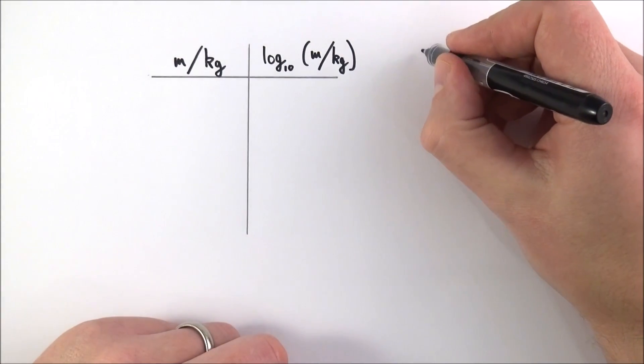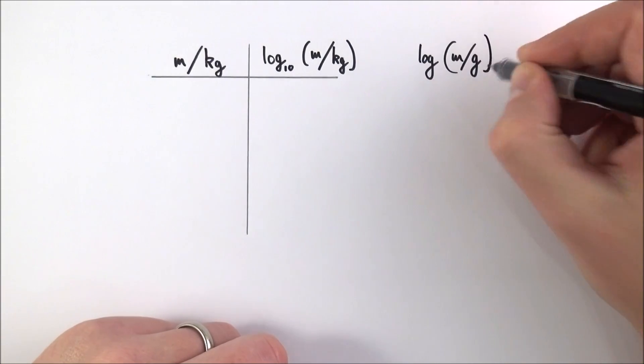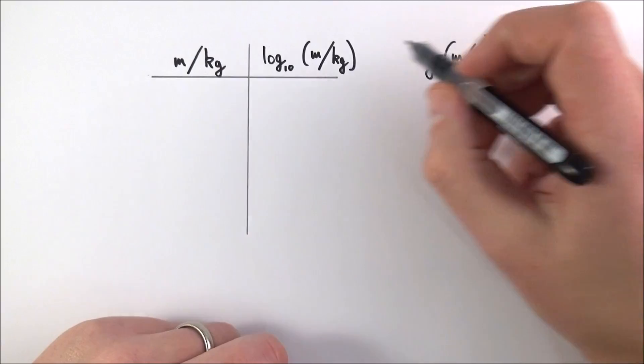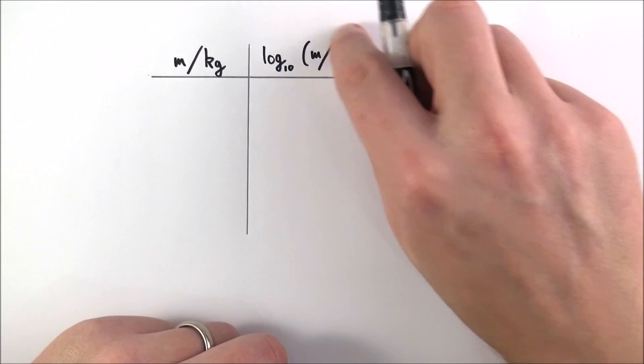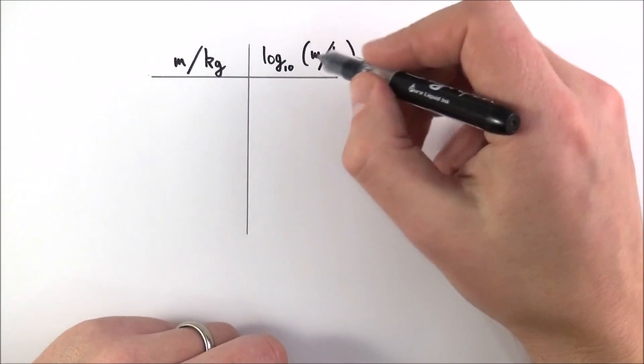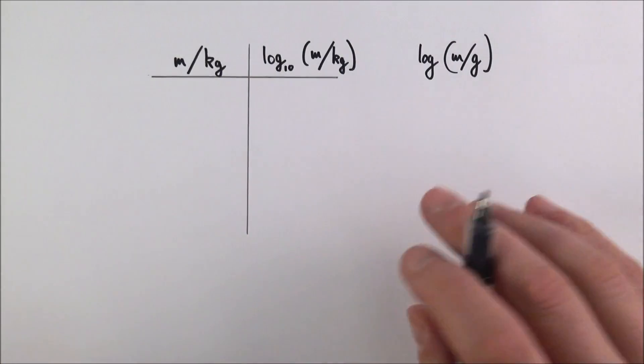If we took the log of mass measured in grams, this would have a very different value. The log number comes out as a pure number with no units, so this is a unitless quantity, but you still need to put the units of the quantity you're taking logs of.